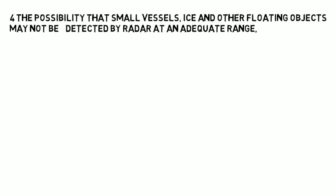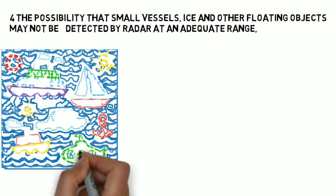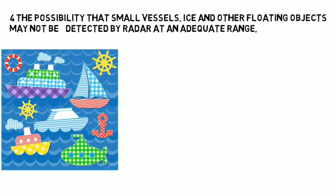Point 4: The possibility that a small vessel, ice, and other floating objects may not be detected by radar at an adequate range.